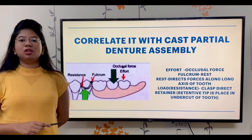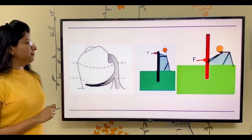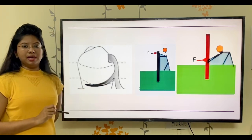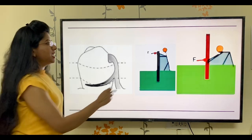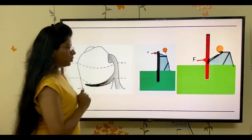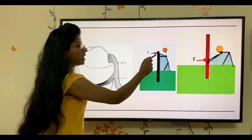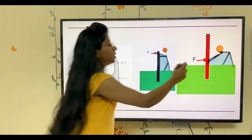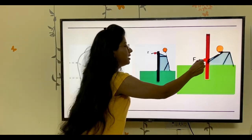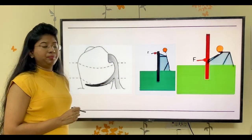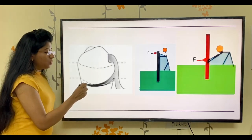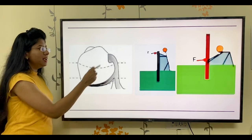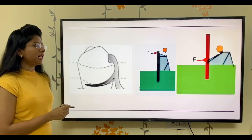This was all about the correlation of lever 1. Now in the second example, there is a retentive tip engaging the undercut but placed cervically. Imagine this is a pole under the ground. If you try to push that pole from high up it is easy, but if you try to push from lower down it is very difficult because the fulcrum is closer to the ground. So we are placing the retentive arc closer to the bone, making it difficult for disengagement of the clasp. That is the second principle for why the retentive tip is placed in the undercut.